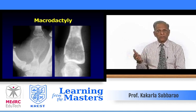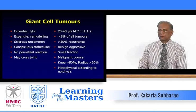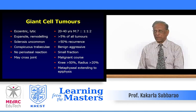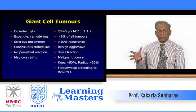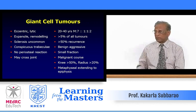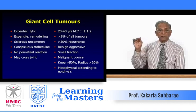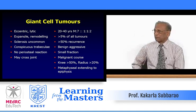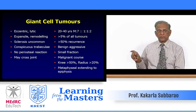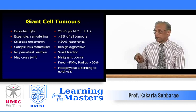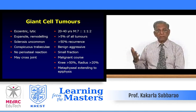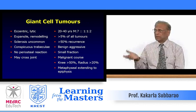Most enchondromas are asymptomatic, but minor trauma causes a fracture and the patient presents with pain. Regarding giant cell tumors, the radiological characteristics are: eccentric, elliptic, expansile with possible remodeling depending on growth rate; sclerosis is uncommon; conspicuous trabeculae give a bubble appearance; no periosteal reaction. It may cross the joint by involving the articular margin. Giant cell tumors typically occur between 20 to 40 years, predominantly in males. More than 50 percent recur after surgery. They are benign but sometimes aggressive, simulating a malignant tumor.